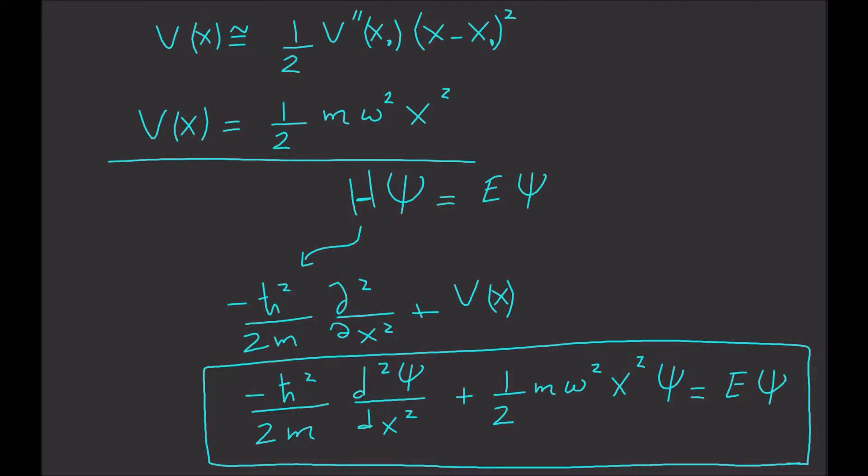We have to find the E values, the energy values. We're going to use two methods: the first one is the algebraic method, and the second method is the analytical method. These will be in two separate videos. So this is the setup for the harmonic oscillator, and in the next video we're going to solve it using the algebraic method.